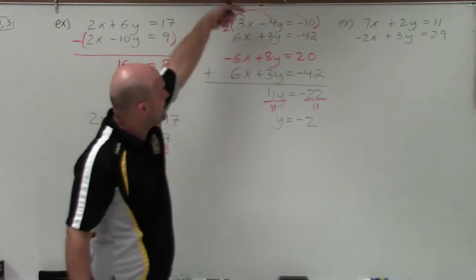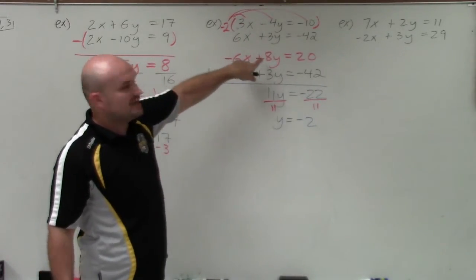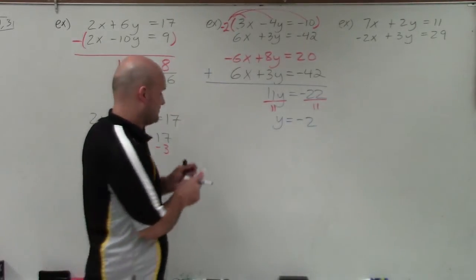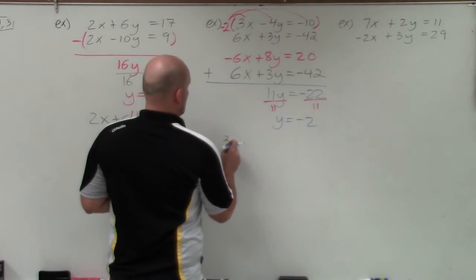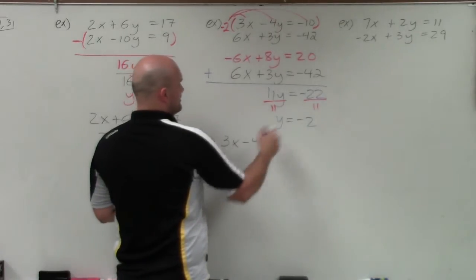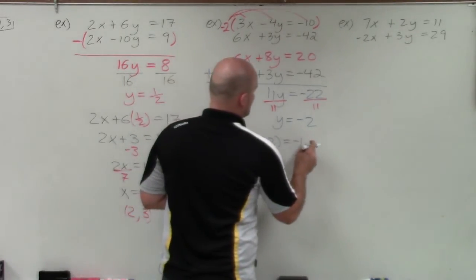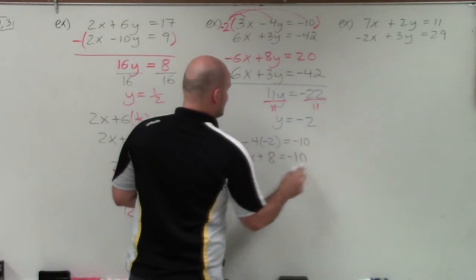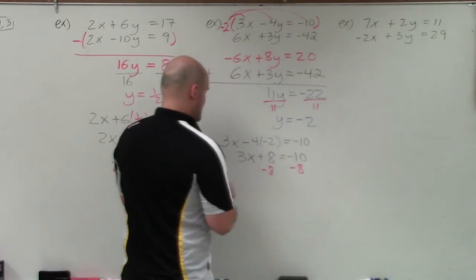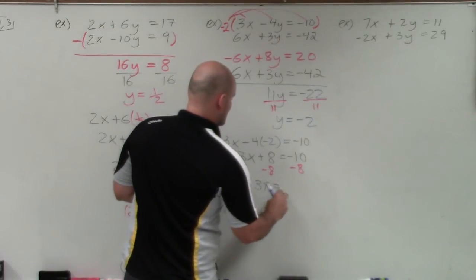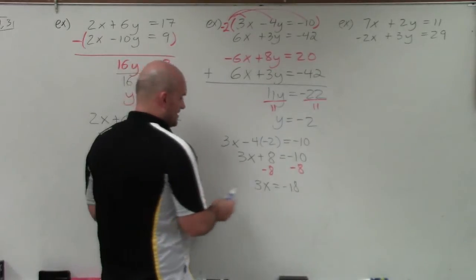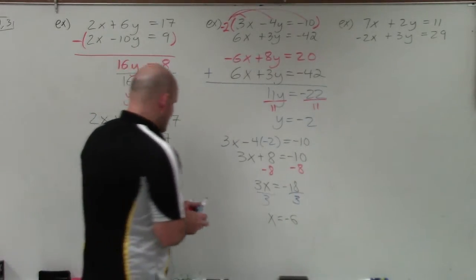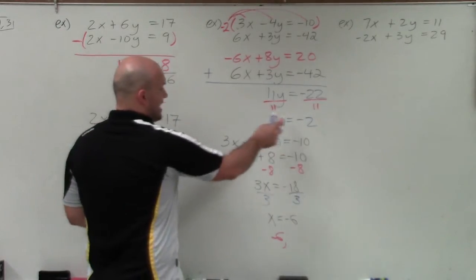Now I take the value of y and plug it back into one of my equations. You can use the altered equation or go back to the original — it doesn't matter. I'll choose the first equation: 3x minus 4 times negative 2, equals negative 10. Simplifying: 3x plus 8 equals negative 10. Using inverse operations, subtract 8: 3x equals negative 18. Divide by 3, and x equals negative 6. So my solution set for this problem is x equals negative 6 and y equals negative 2.